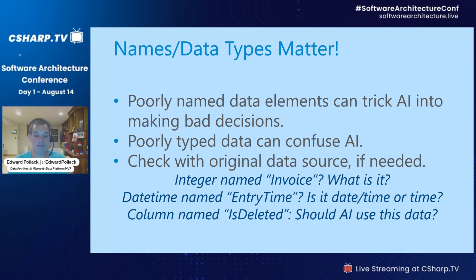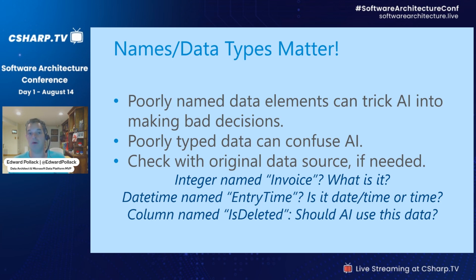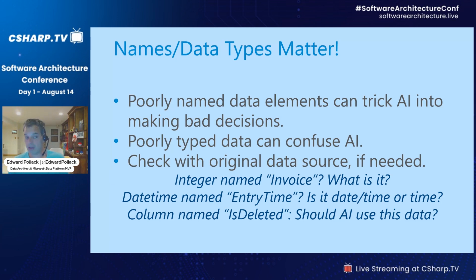Look at any data you have and examine the names, data types, and sizes — validate whether they're correct. For example, if I had a datetime named 'entry_time,' is it really a datetime? Sometimes we store dates as strings, which is dangerous because strings could have bad values. February 31st is not possible in a properly typed datetime, but it could appear in a string. Or you could mix up European and American date formats — some write 2/29 for February 29th, others write 29/2. Or year-month-day vs. year-day-month. Those things matter — AI is going to consume this data, look at it, and make decisions based on it. It needs to be clear.